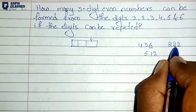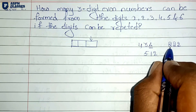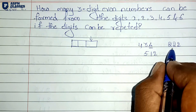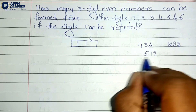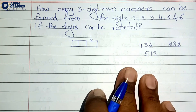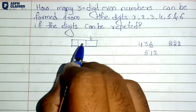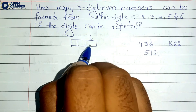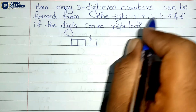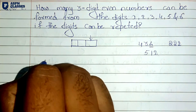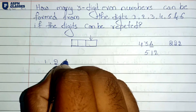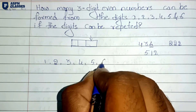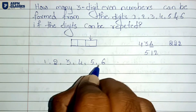For the number to be even, the unit place must have an even number. The digits available are 1, 2, 3, 4, 5, 6. The even numbers among these are 2, 4, and 6.